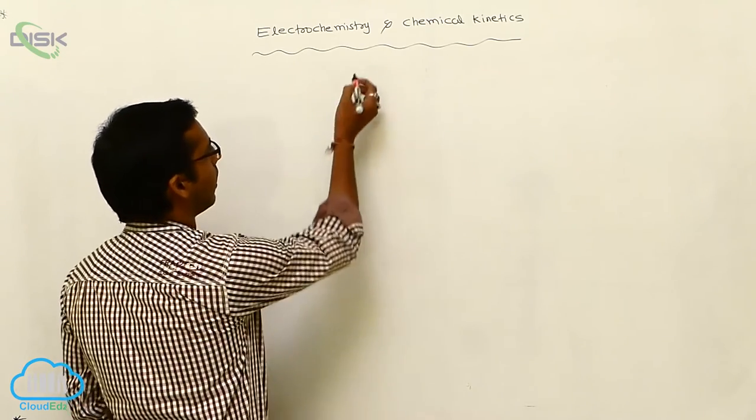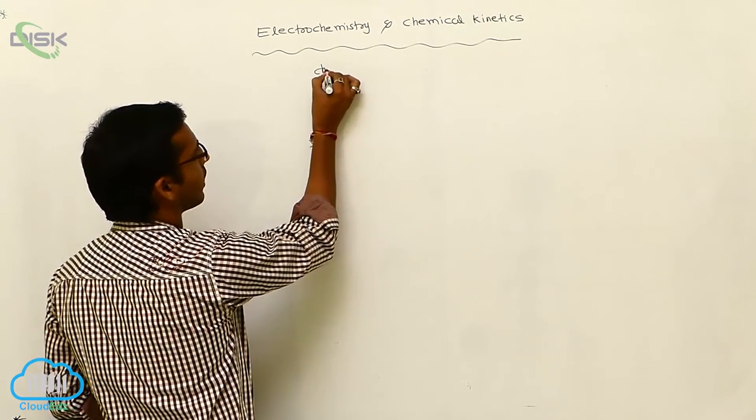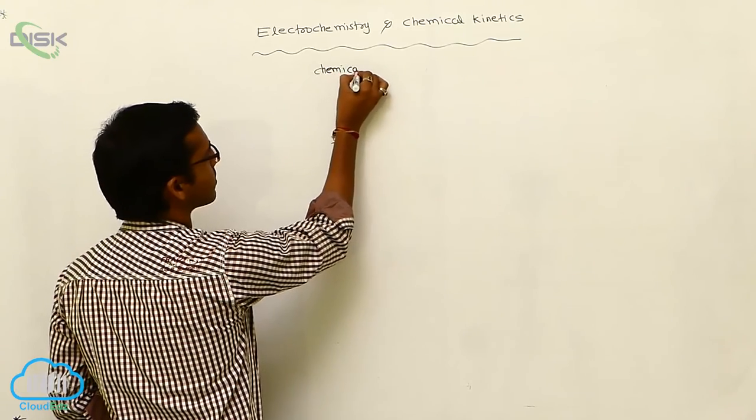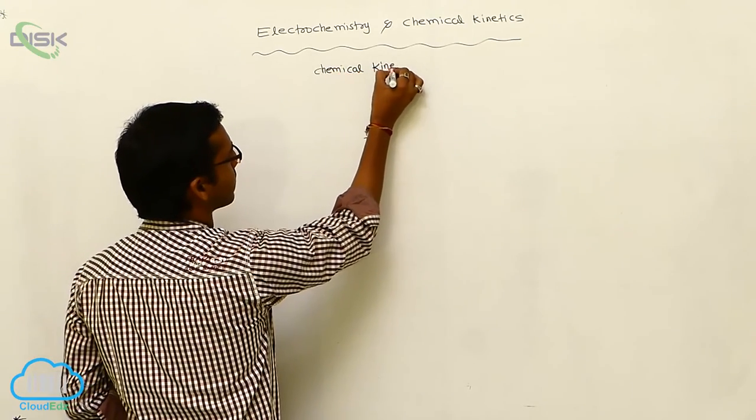These are the examples for primary and secondary batteries. Now we will discuss another branch of physical chemistry: chemical kinetics.